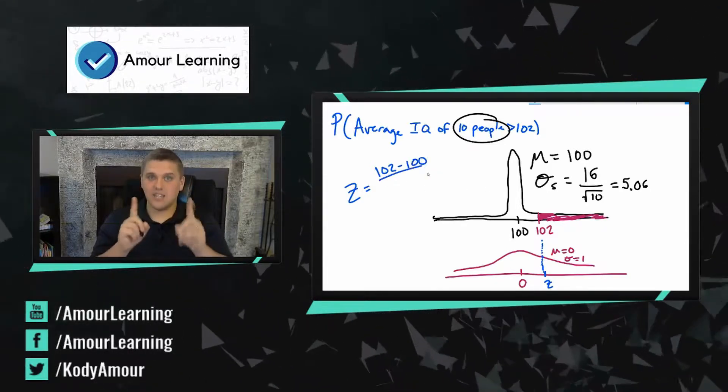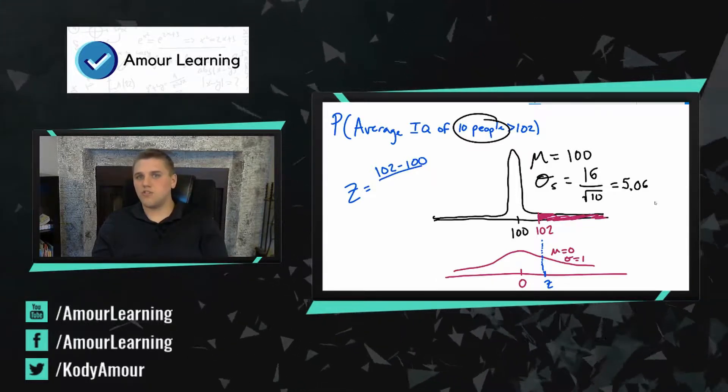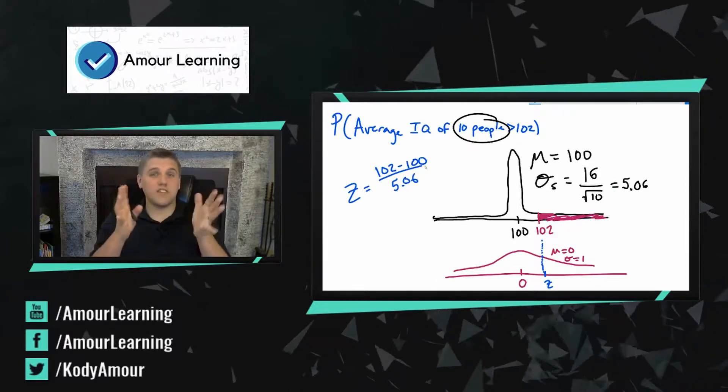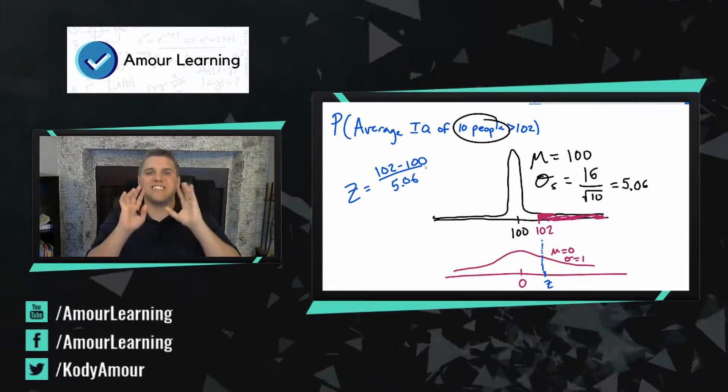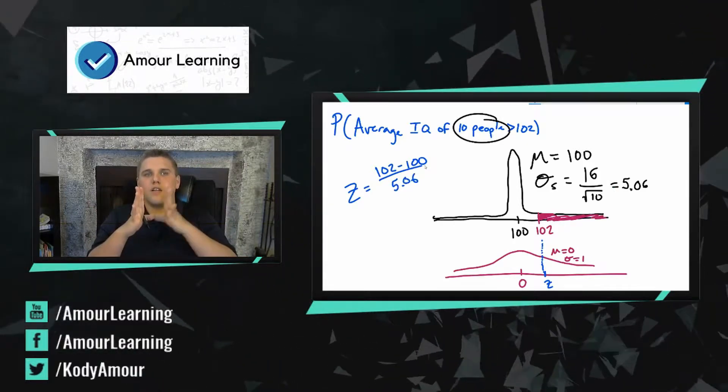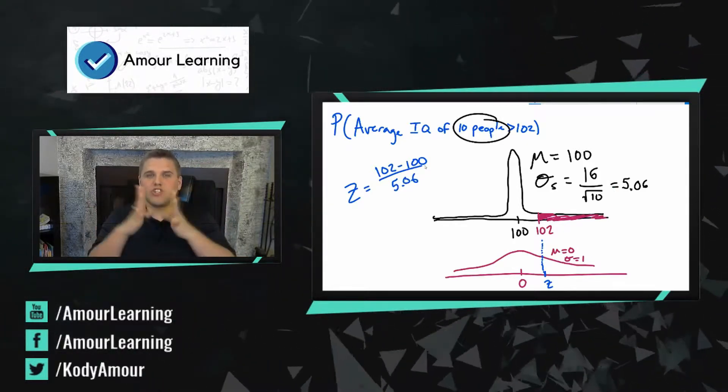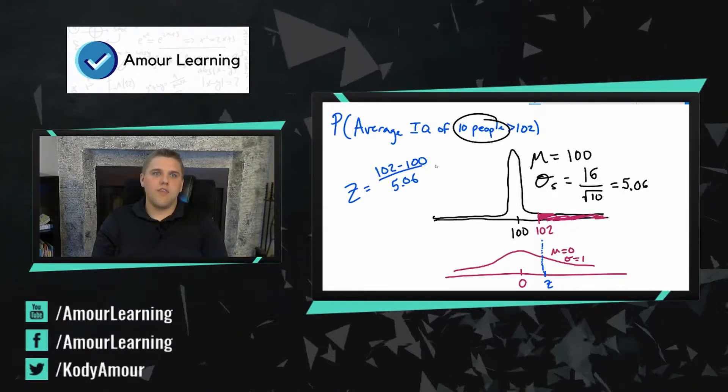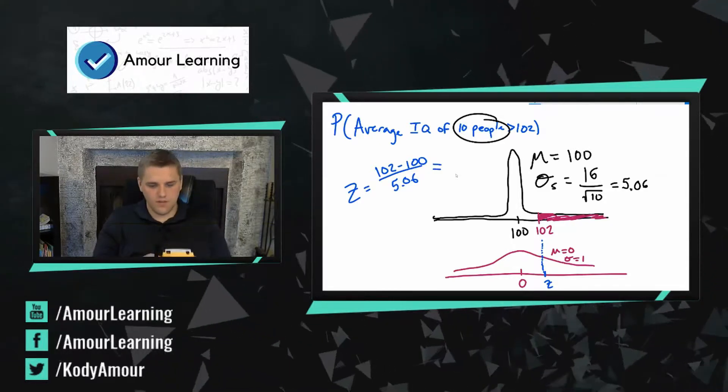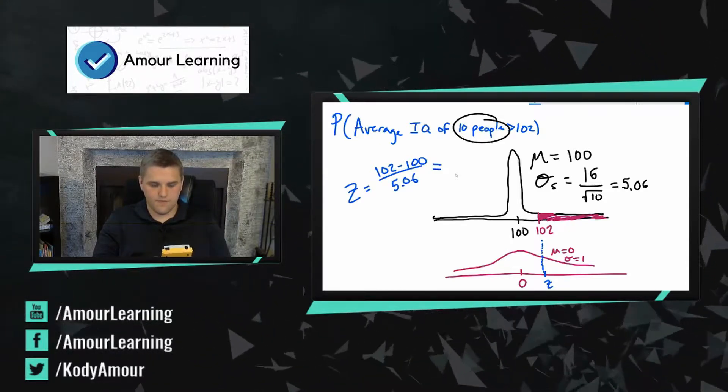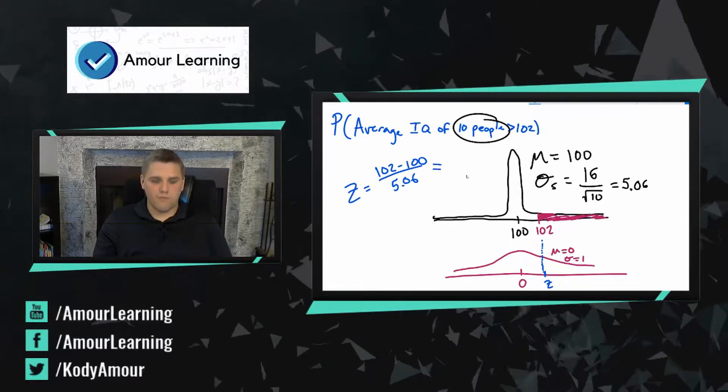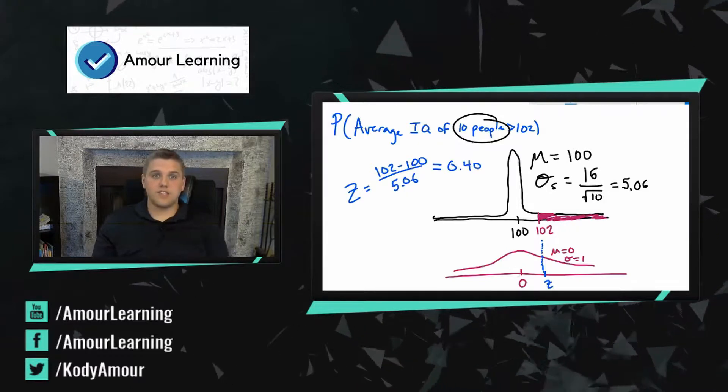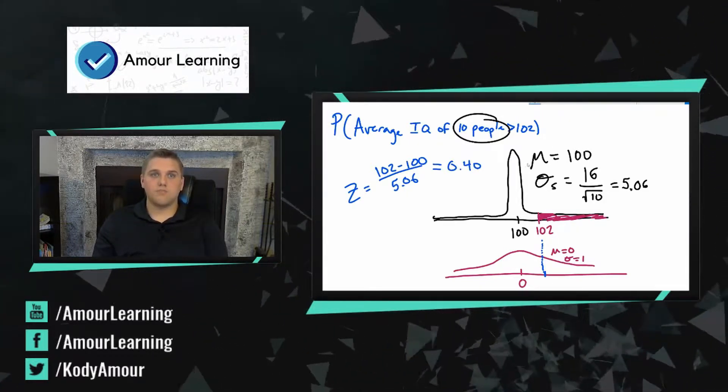But my standard deviation is not 16 this time. My standard deviation for this bell curve is 5.06. And that's the only difference with this problem, guys. The only difference is that the standard deviation is much smaller because if I have 10 people grouped together, I should expect IQ averages to be closer to 100. Now this number is 0.40.